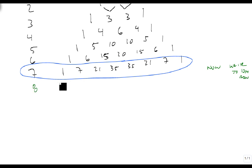So let's just build from the 7th row. 1, 8, 28, 56, 70, 56, 28, 8 and 1.